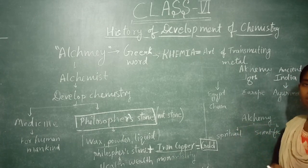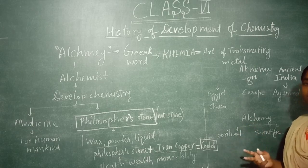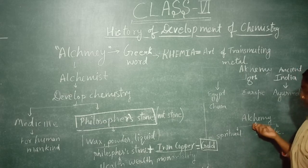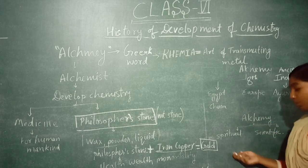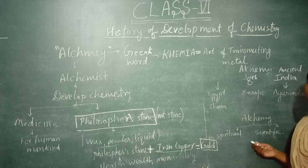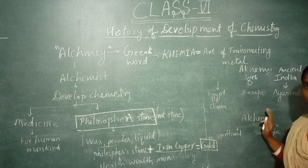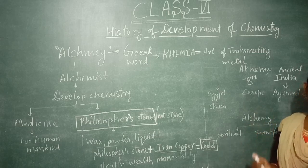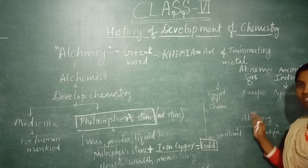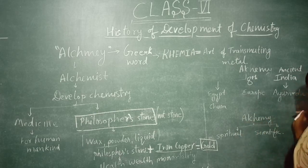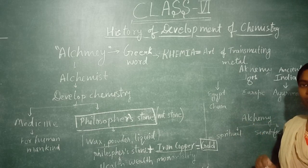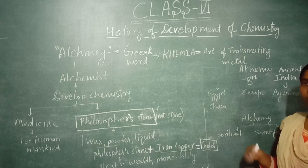In India it was known as Ayurveda. At that time alchemy was both types — some customs had scientific reasons and some had spiritual reasons. So alchemy was both spiritual and scientific. Alchemists never divided these two branches, but as discoveries progressed and chemistry developed, they divided the spiritual one separately and the scientific one separately.